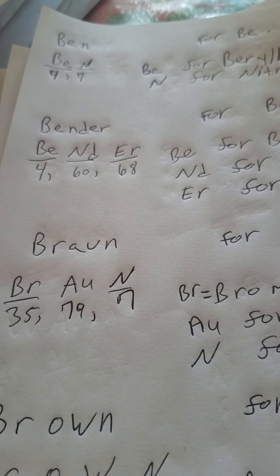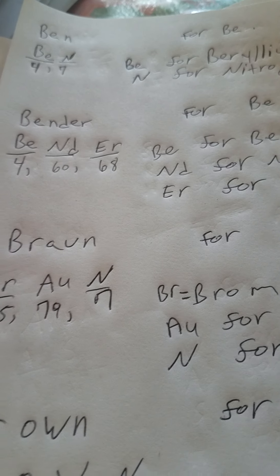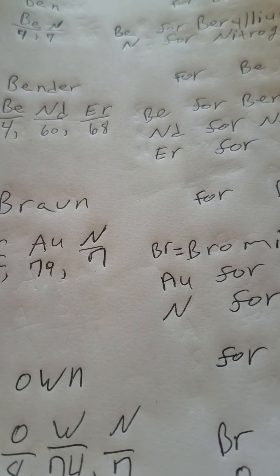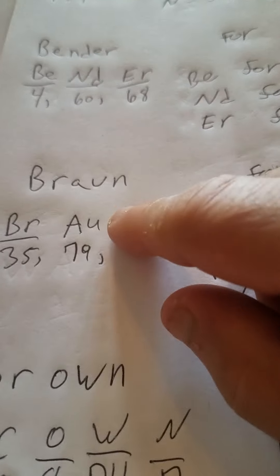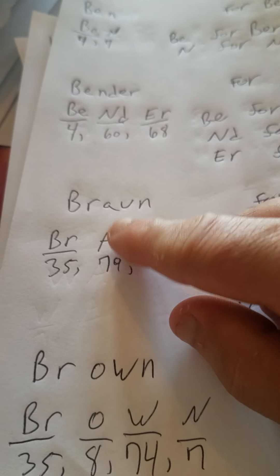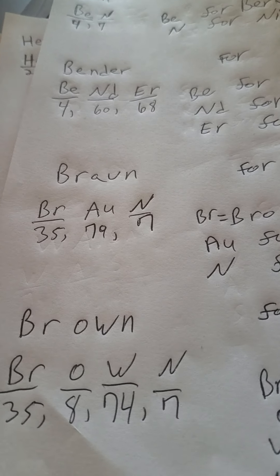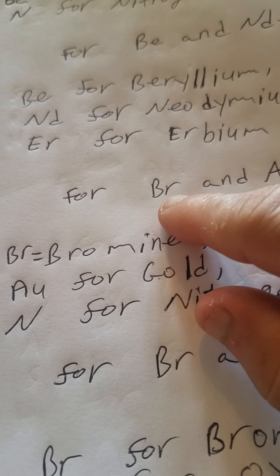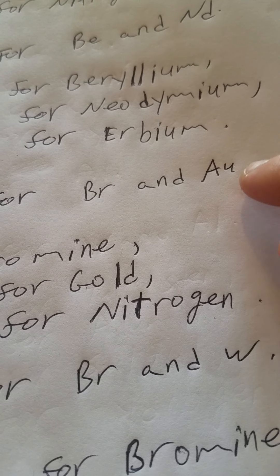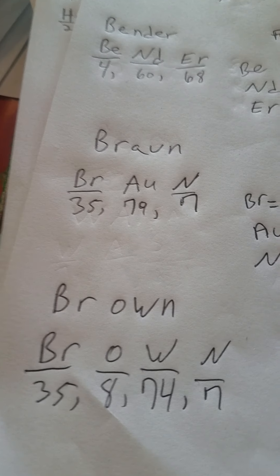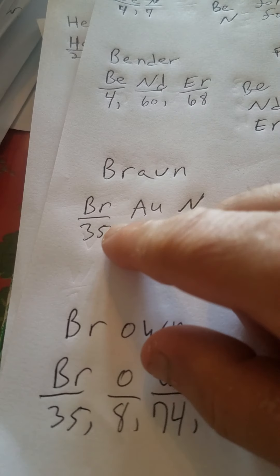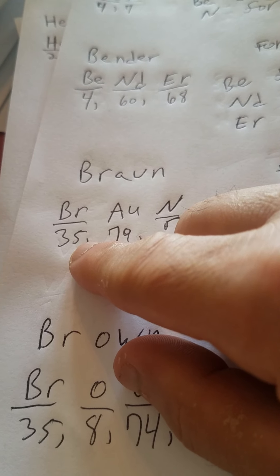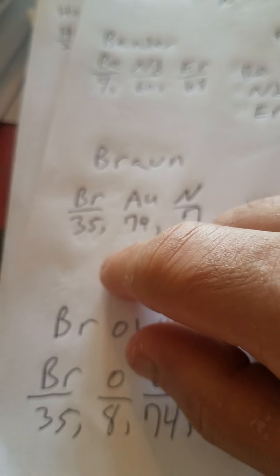We got the name Braun, a German name, somebody's last name like Lauren Braun. B-R-A-U-N, capital B-R-A-U-N. We're looking for Br for bromine, and capital A-U for gold. Gold is not G-L, but it's A-U. So we got Br, atomic number 35 for bromine. Bromine at room temperature is a liquid. We got capital A-U for gold, which is 79.